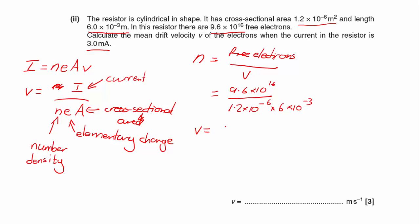So we're going to say that V is 3 times 10 to the minus 3, so that's our current, divided by our number density which is going to be, let's do it up here, 1.2 times 10 to the minus 6 times 6 times 10 to the minus 3.